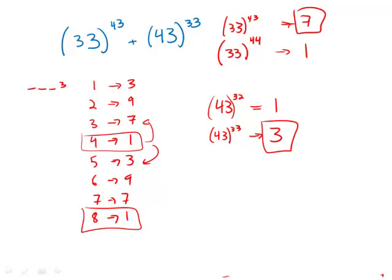So we have something with the units digit of 7 plus something with the units digit of 3, which means it would have a units digit of 0. And this is answer choice A.